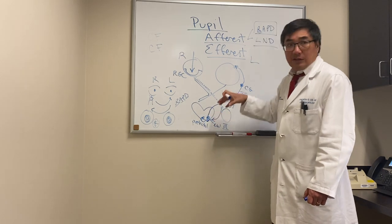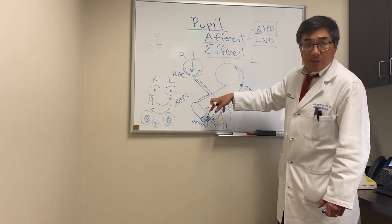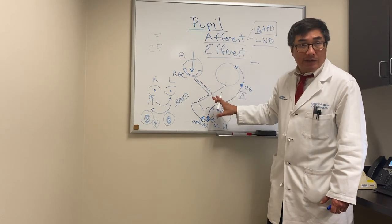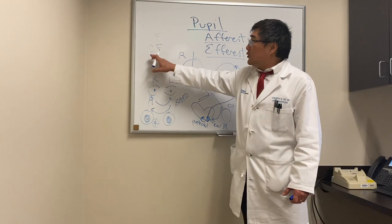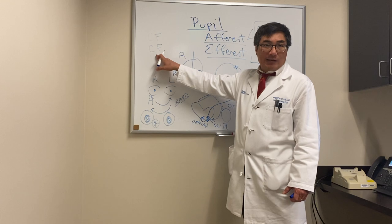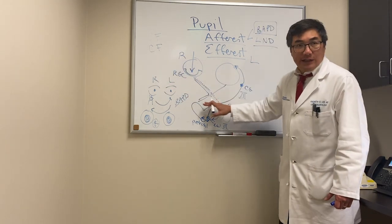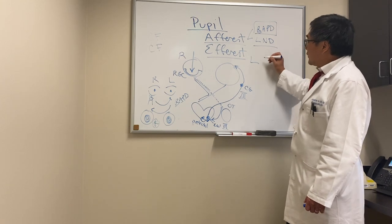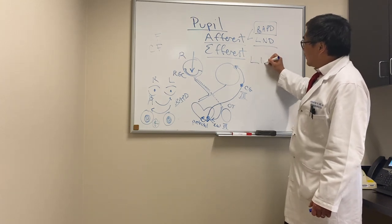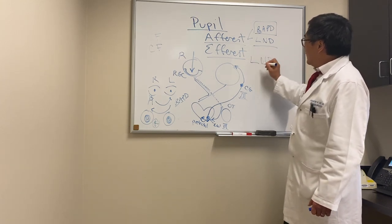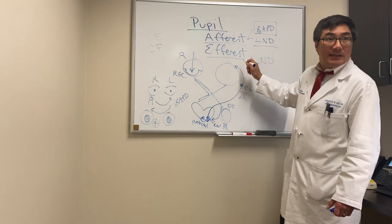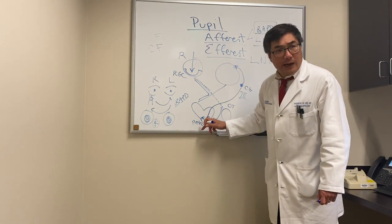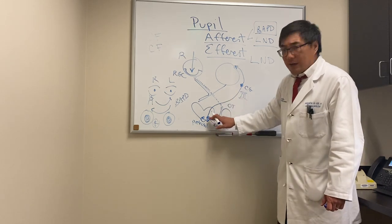The Edinger-Westphal nucleus can receive signal from the more rostral midbrain for the near reflex. In fact, you can be completely blind and still generate a near reflex. So in someone who has no RAPD because of bilateral symmetric anterior visual pathway disease, we look for light-near dissociation. Unfortunately, light-near dissociation can also occur in efferent pathway disease, where the disconnection occurs at the dorsal midbrain, disconnecting the light pathway from the near pathway.